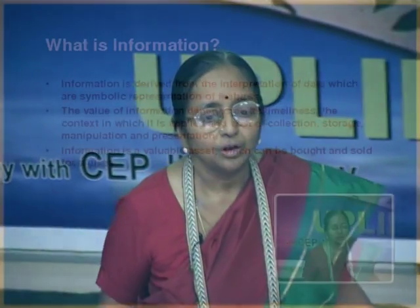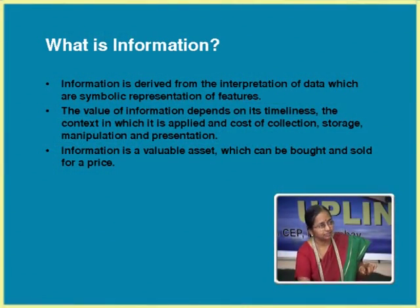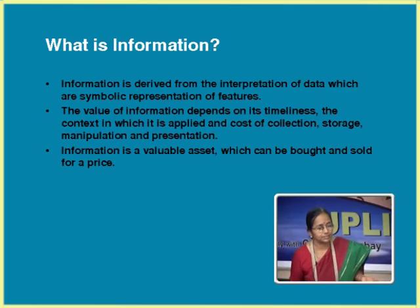The title itself says Geographic Information System, so we should know what information is. If I give you the number 25721237, it doesn't mean anything — it's just a value. The moment I say it's the telephone number of so-and-so, the same data becomes information. Information is derived from the interpretation of data, which are symbolic representations of features. But whenever we say information, we have to see its value — which depends on timeliness and the context in which it is applied.